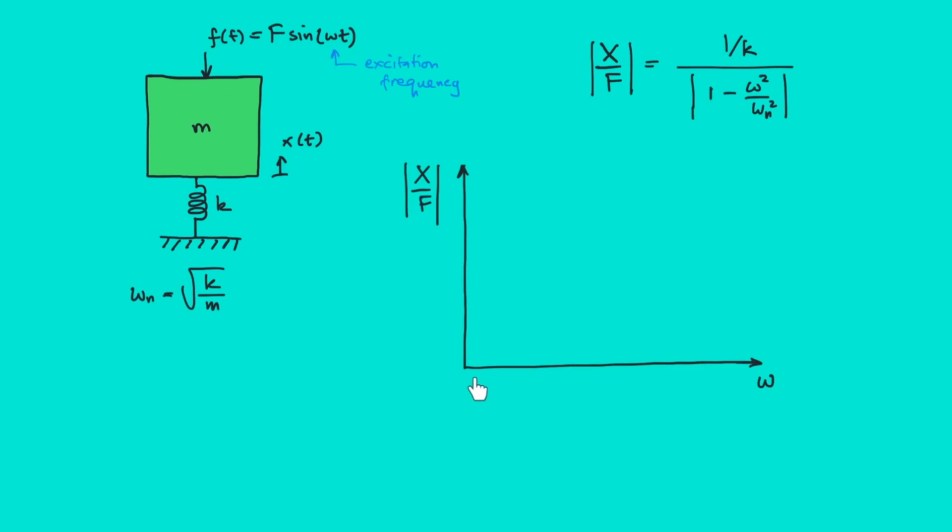Let's say the excitation frequency will have the same value with the natural frequency somewhere over here. And for ease of analysis we divide the frequency into three regions with ωₙ as the reference.